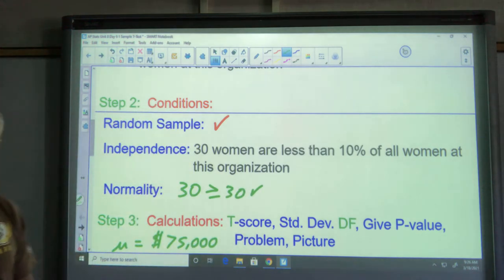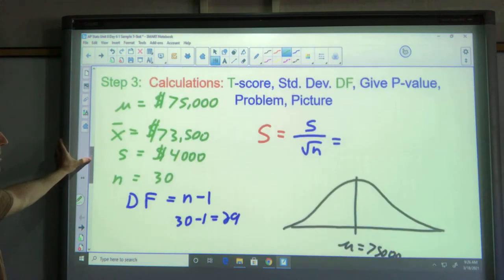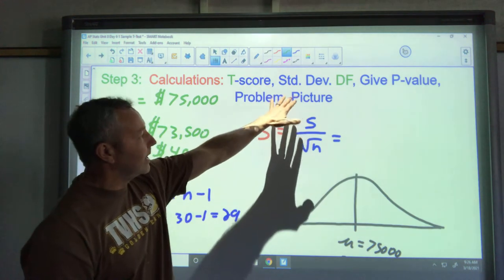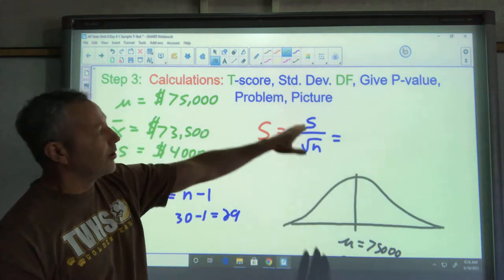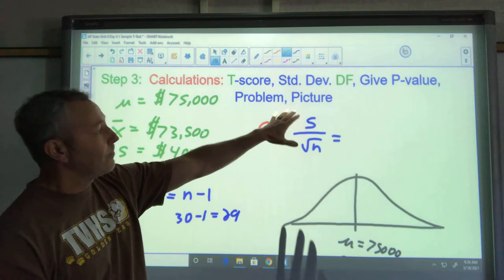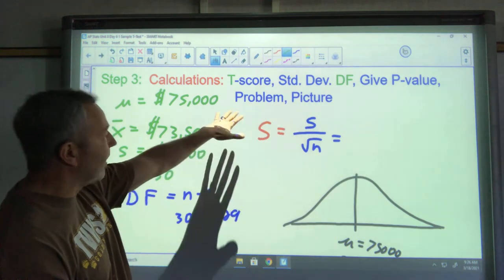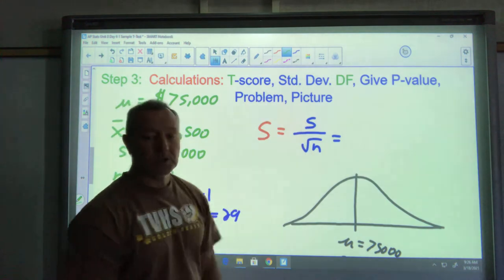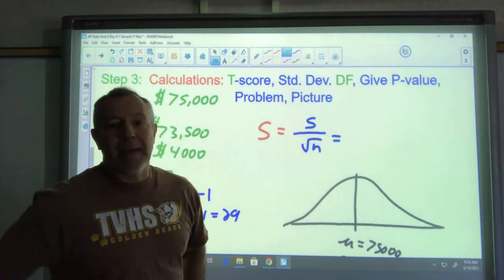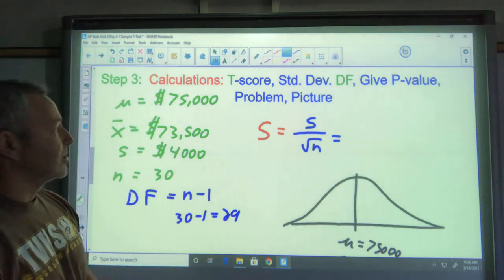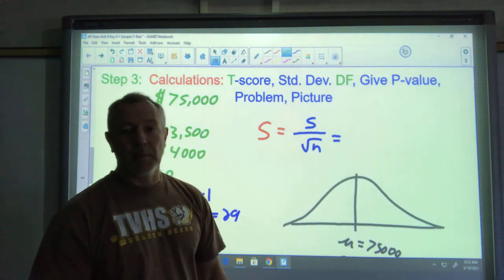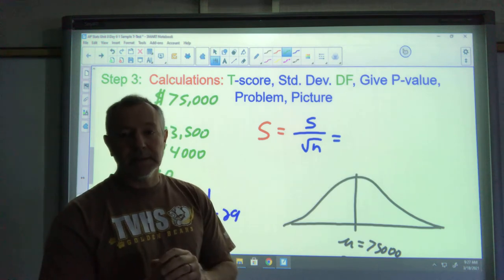Moving on, here comes our calculations, the main body of our work. We have to show the t-score calculation, standard deviation calculation, degrees of freedom must be noted. We're going to do the p-value. We should show a picture and write our problem in math language. Notice it's a t-test because we're doing a mean problem. All mean problems will be a t-distribution.